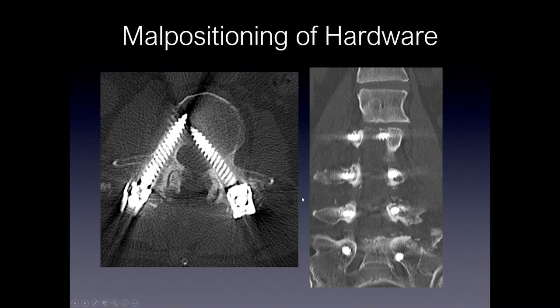Malpositioning of hardware is another important complication to be aware of. You want to assess where all the screws are and if they're appropriately located. You can see this right pedicle screw is in its normal course — within the pedicle along the lateral aspect of the pedicle wall and the lateral aspect of the vertebral body. On the left side, the screw is penetrating more medially into the medial aspect of the vertebral body, and it's along the lateral aspect of the spinal canal because it has penetrated the pedicle. On the coronal, you can clearly see the screw displaced medially within the spinal canal — multiplanar reformats are important here.